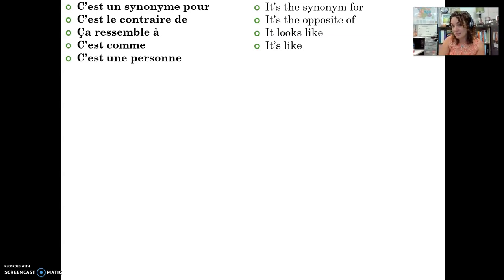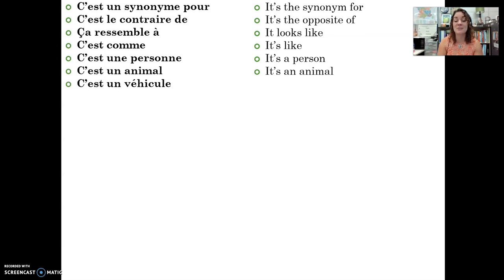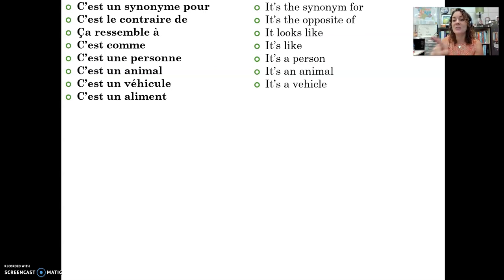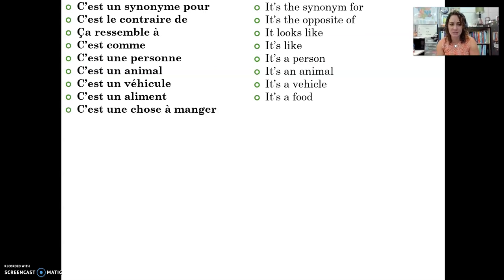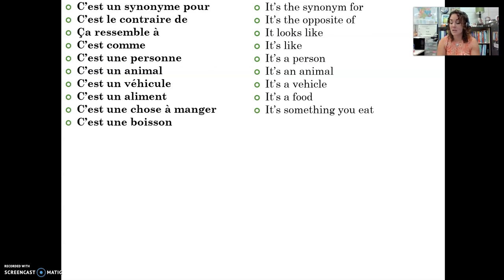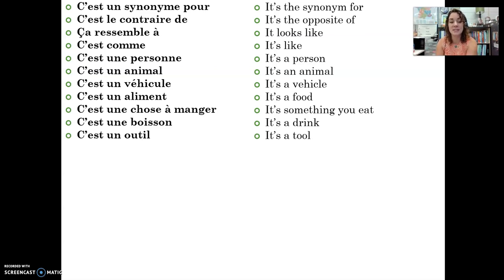C'est une personne — it's a person. C'est un animal — it's an animal. C'est un véhicule — like a vehicle, a car, a boat, a plane. C'est un aliment — aliment is a synonym for la nourriture, food. C'est une chose à manger — maybe you can't remember the word aliment, so you could use circumlocution again and say it's a thing you eat. C'est une boisson — it's a drink. C'est un outil — it's a tool.